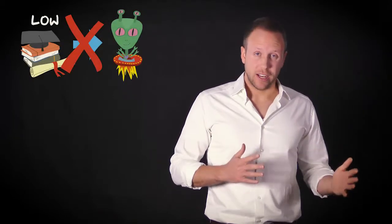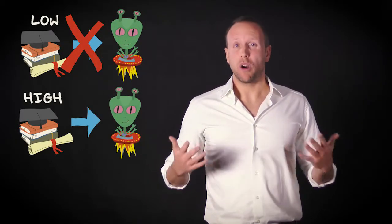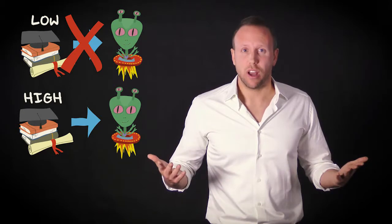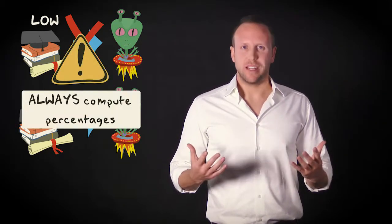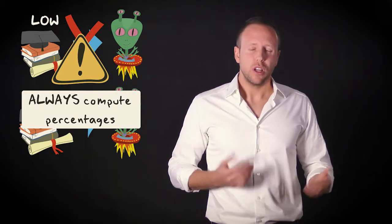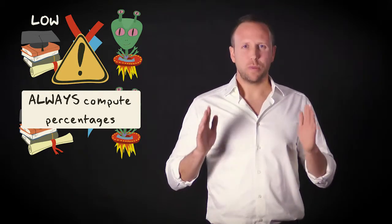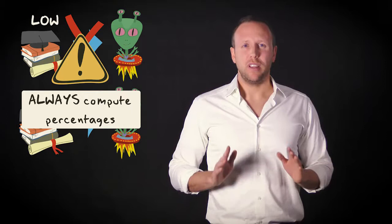These percentages indicate that not the lower educated, but the higher educated are more likely to believe in extraterrestrial life. You can only discern that pattern when you work with percentages or with proportions. So always compute percentages and never work with the original numbers. Otherwise, you will get strongly alien results.